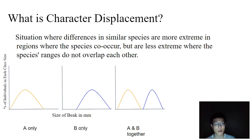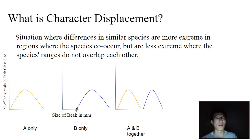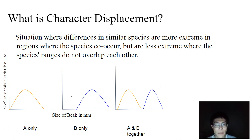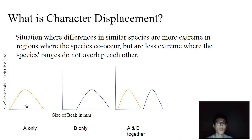Similarly, for species B on island 2, it has a sort of lean in terms of its spectrum towards the higher end of the scale — it tends to have larger beaks. But overall, the extremes are going to be very dispersed; there's going to be a wide range of beak sizes. You can see that the beak sizes of species A and B overlap in individuals where they're found alone on their individual islands.